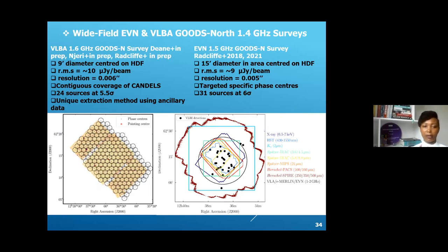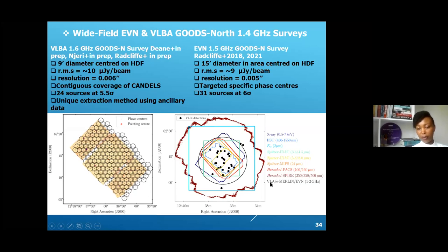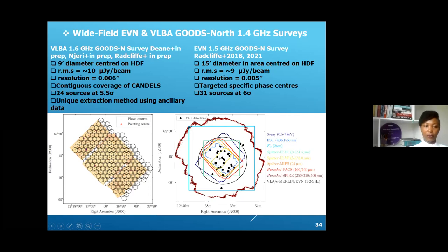These are some characteristics based on observations with the VLBA and EVN. The panel on the right shows the multi-wavelength coverage of the GOODS-N field: coverage with X-ray, optical using the Hubble Space Telescope, infrared, mid-infrared, and radio using the VLBA and EVN. The black circle shows the VLBA and EVN observation area; the blue region shows the Hubble Space Telescope optical coverage, which corresponds to the same region as the VLBA observations. With the EVN we detected 21 sources at 6-sigma, and with the VLBA we detected 24 sources at 5.5-sigma.